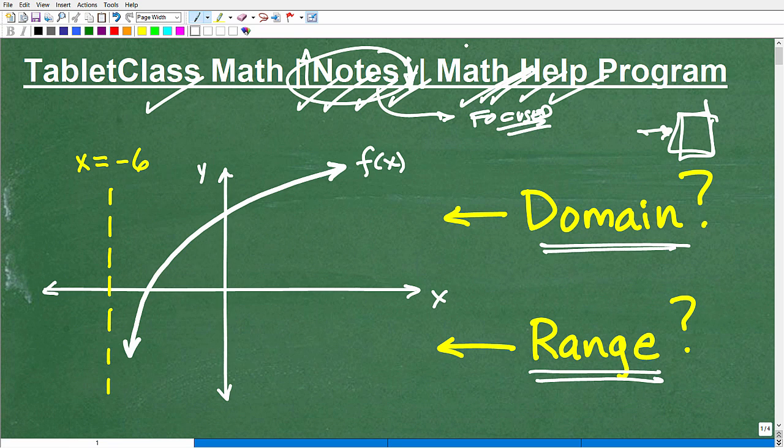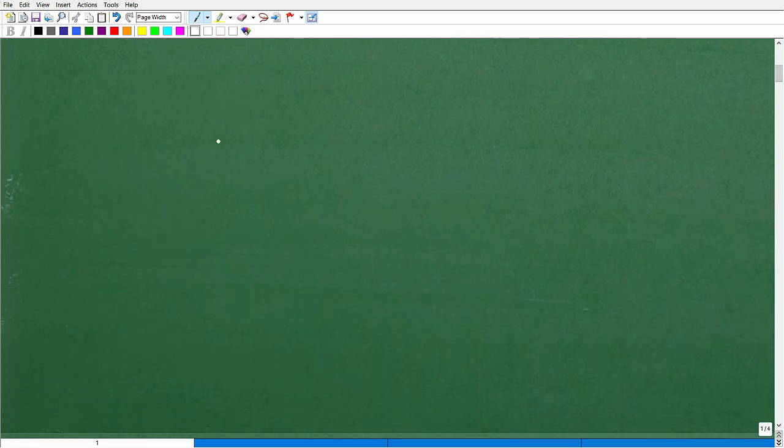All right. Now, let's talk about this particular problem. And this is, of course, an example of one type of problem that you might face. But it's a common problem. Now, what I'd like you to do, if you think you know what to do here, is pause the video and tell me what the domain range of this particular function is.